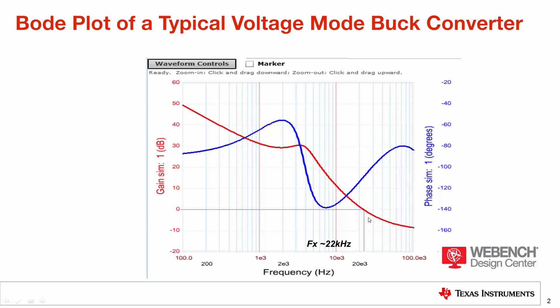That is my crossover frequency, and we defined phase margin as how much phase was above 180 degrees at crossover. In my case this is about 70 degrees of phase margin.